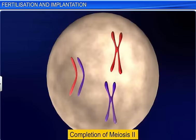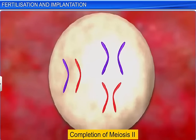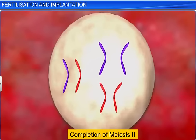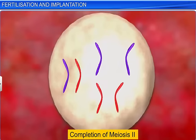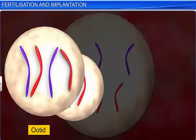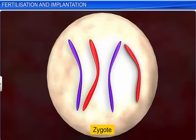The fertilized egg now resumes the remaining phases of the second meiotic division. However, this division being unequal results in the formation of two unequal bodies: a haploid ovum called ootid, and a second polar body. While the second polar body degenerates, the ootid and the haploid nucleus of the sperm fuse together to form a diploid zygote.